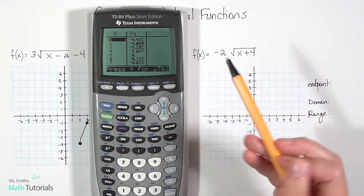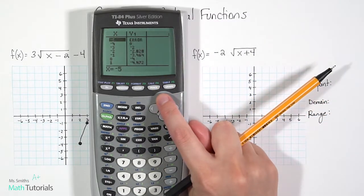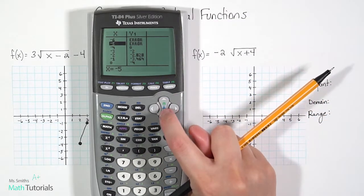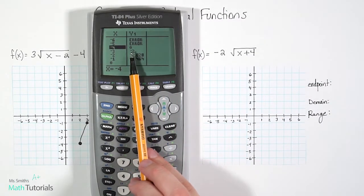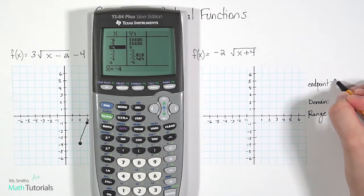Let's go to our second graph to be able to look at our table. Right away, I don't see any errors, so let me scroll up a bit and see if I can find it. There it is. Okay, so my first point after the error is negative 4, 0. That tells me that's my endpoint.